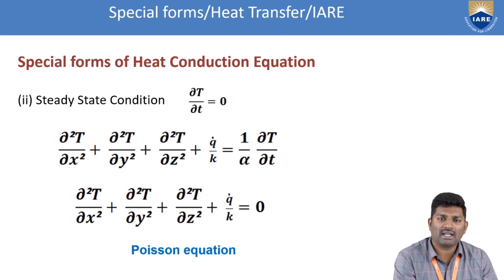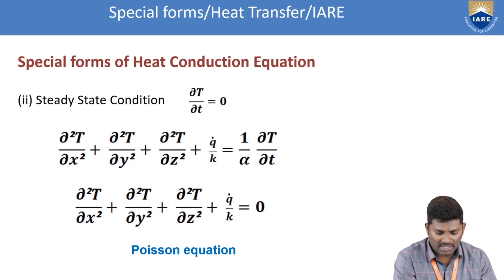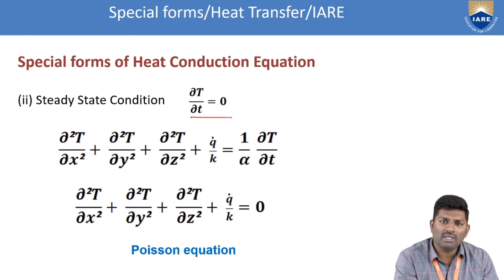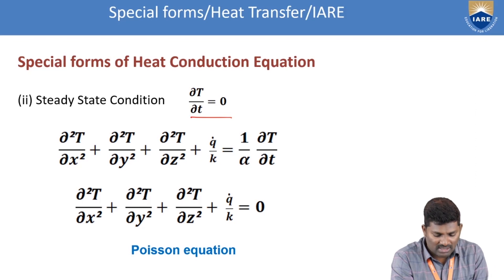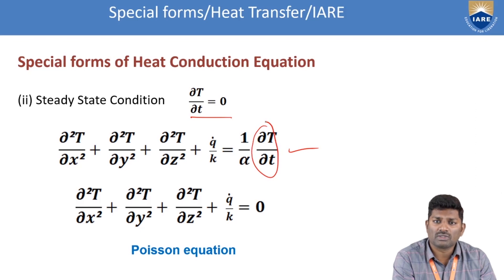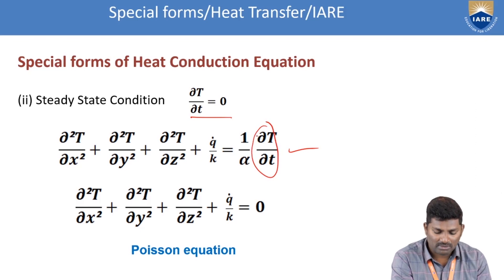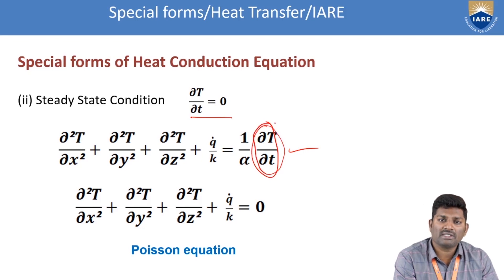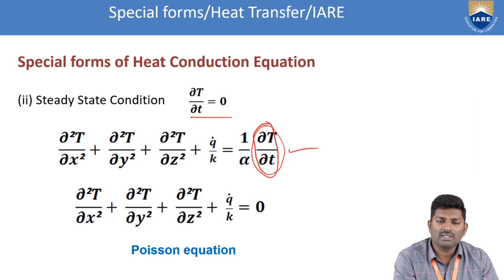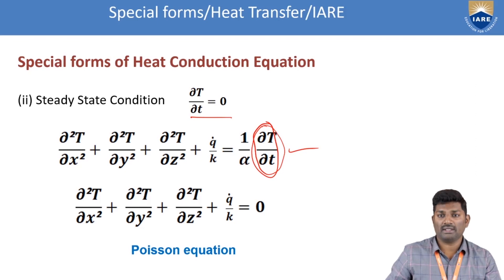The second special form is the steady state condition, where temperature change with respect to time is constant, that is ∂T/∂t = 0. Substituting ∂T/∂t = 0 in the general heat conduction equation gives the Poisson's equation: ∂²T/∂x² + ∂²T/∂y² + ∂²T/∂z² + q-dot/k = 0. This is the steady state condition in heat conduction.